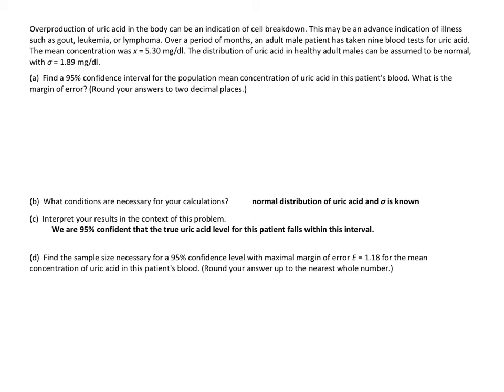Now we have a second example. Over production of uric acid in the body can be an indication of cell breakdown. This may be an advanced indication of illness such as gout, leukemia, or lymphoma. Over a period of months, an adult male patient has taken nine blood tests for uric acid. The mean concentration was 5.30 milligrams per deciliter. The distribution of uric acid in healthy adult males can be assumed to be normal, and we are given the population standard deviation sigma. Part A: find a 95% confidence interval for the population mean. What is the margin of error?